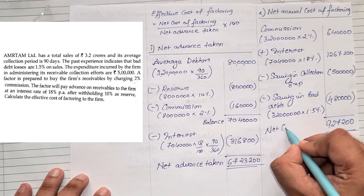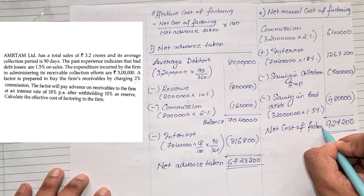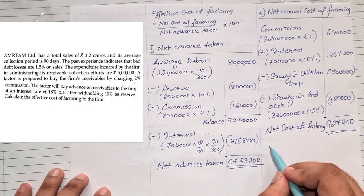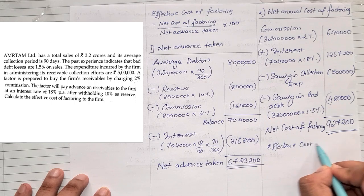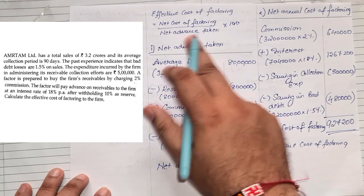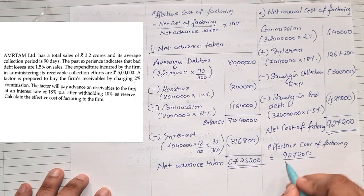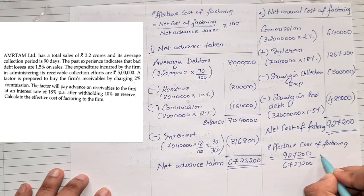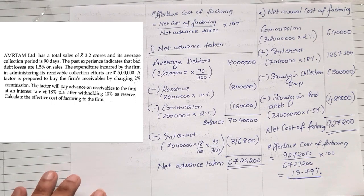That is our net annual cost of factoring. Now applying the final formula: effective cost of factoring equals net cost of factoring which was 9,27,200 upon net advance taken 67,23,200 into 100, which comes to 13.79%. So our effective cost of factoring is 13.79%.